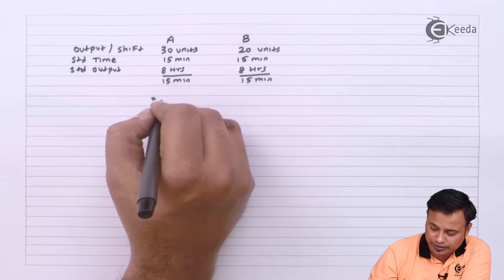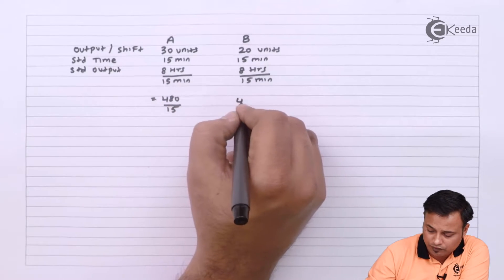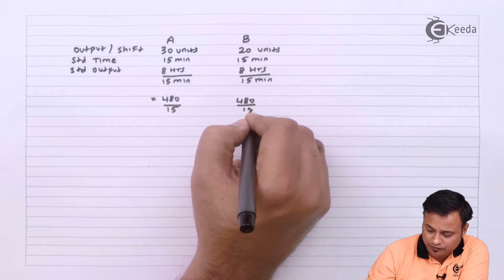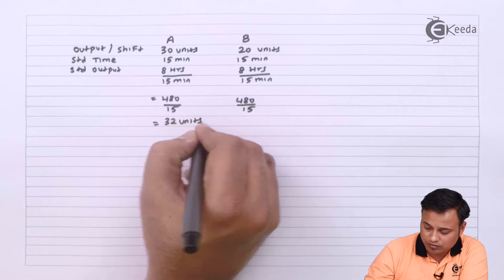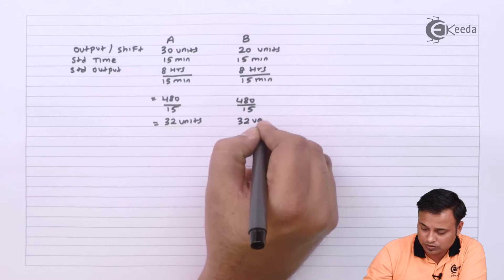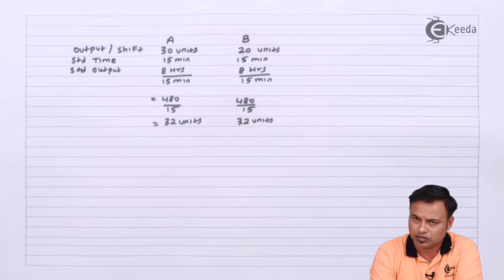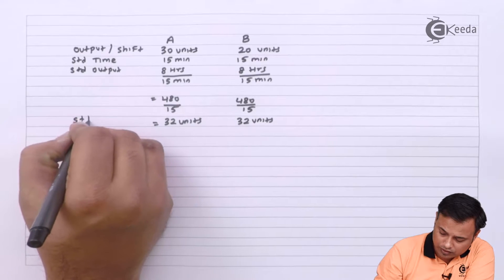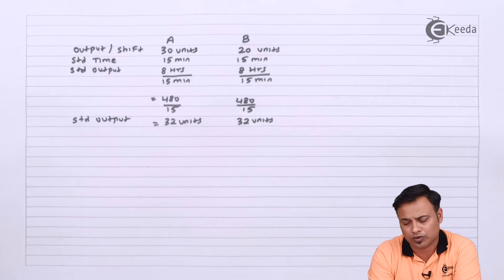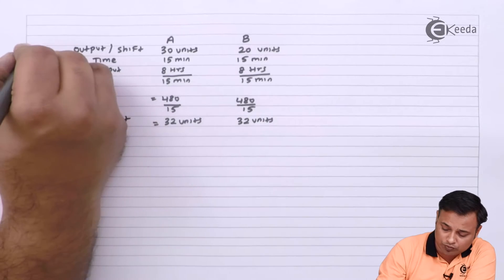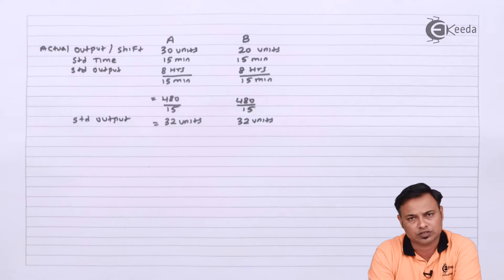So 8 hours can be taken as 480 minutes divided by 15, 480 minutes divided by 15. This is your standard output or normal output or expected output, and this is the actual output per shift.